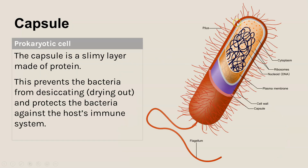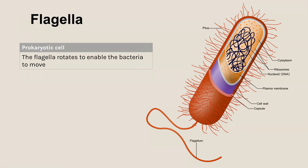The capsule is a thick, slimy layer on the outside of the cell wall made of protein. Its function is to stop the bacteria from drying out — or desiccating — and also to cover the antigens on the outside of the cell, helping to hide and protect the bacteria against the host's immune system. Capsules are not found in all prokaryotic cells.